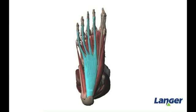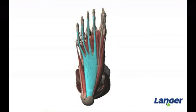The flexor digitorum brevis originates on the medial process of the calcaneus. Each of its four strands splits and inserts onto the medial and lateral side of the four lateral phalanges. This split enables the flexor digitorum longus tendon to pass through and insert onto the middle of the four lateral phalanges. The function of the flexor digitorum brevis is to flex the four lateral digits at the proximal interphalangeal joint.